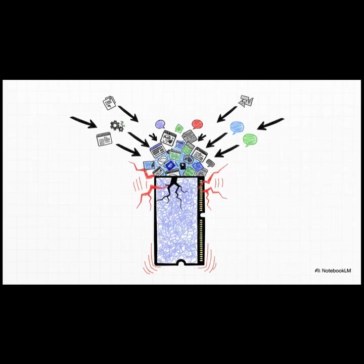Just imagine an AI agent trying to research and write a detailed report. Every tool it uses, every website it reads, every little interaction — it all generates this mountain of new information. And pretty soon, all that data floods its working memory, its RAM, until it's totally overwhelmed and just starts to break.